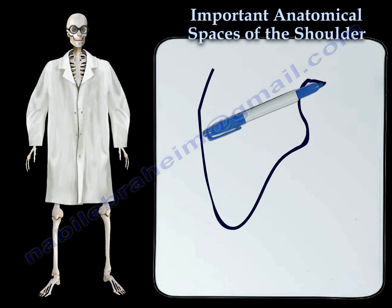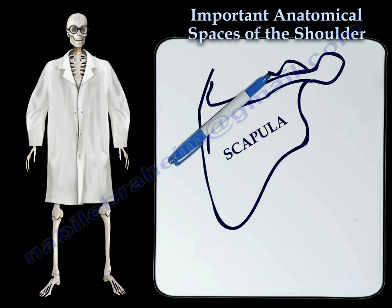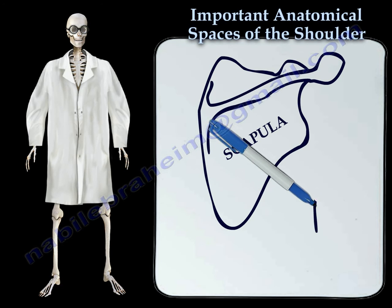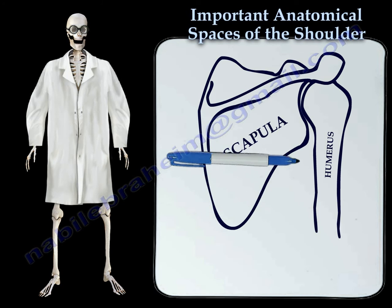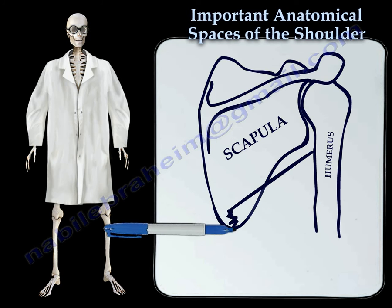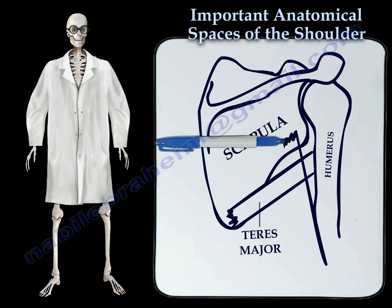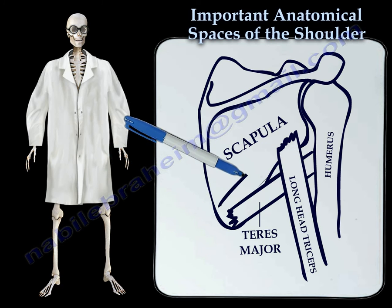Here you can see the scapula. Next, let's draw out the humerus. There are three muscles that make up these important anatomical spaces. These muscles include the teres major, the long head of the triceps, and the teres minor.